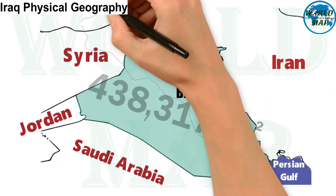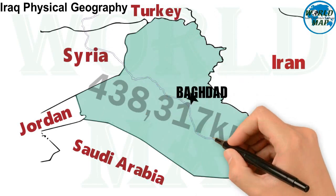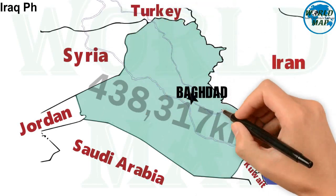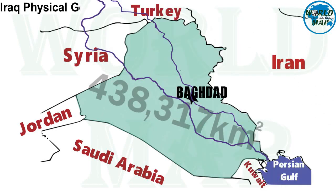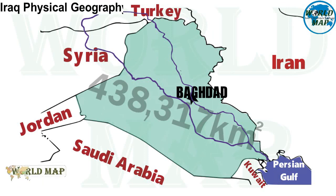The Tigris-Euphrates river system is a large river system in Western Asia which discharges into the Persian Gulf. Its principal rivers are the Tigris and Euphrates, along with smaller tributaries.